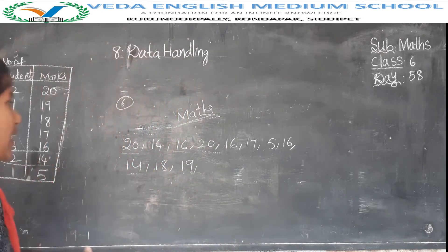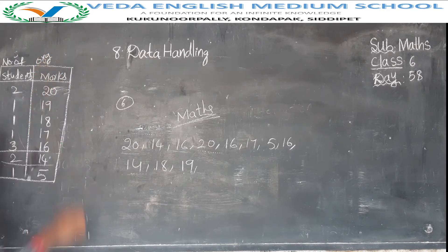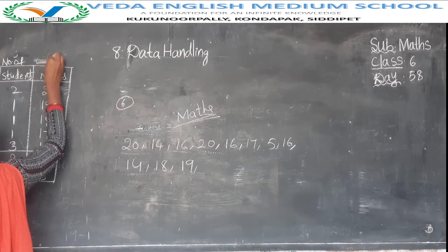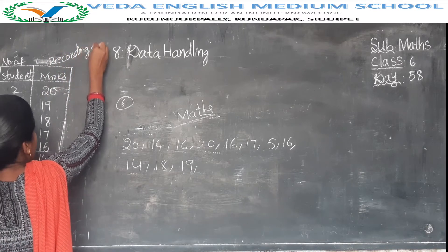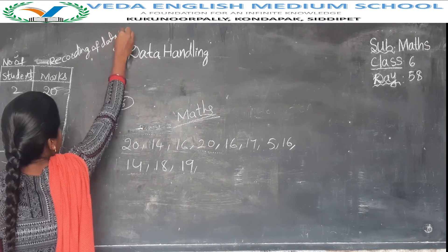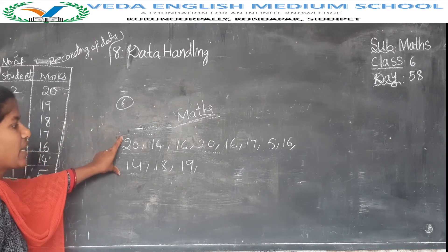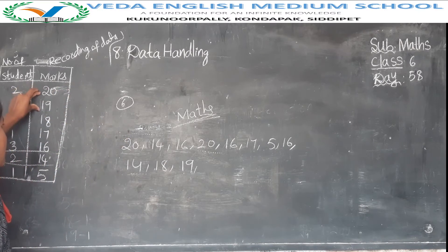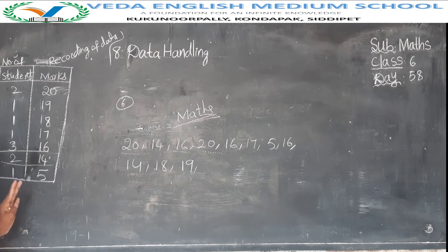So if you arrange data in the form of a box, that is called recording of data. It is the same information, but here we have collected it in the form of a group, and here the same data is collected in the form of a box. When you collect data in the form of a box, that is called recording of data.